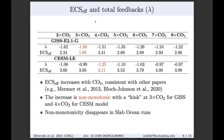Lambda for the GISS model at 2x CO2 starts at -1.62 and at 8x CO2 is -1.22. ECS effective goes from 2.24 to almost 3, consistent with other papers showing ECS increases with CO2. However, at 3x CO2, lambda has a minimum at -1.86, so ECS effective also has a minimum there. The increase is non-monotonic with a kink at 3x CO2 for GISS and 4x CO2 for CESM. When we do slab ocean runs, the non-monotonicity disappears.